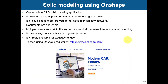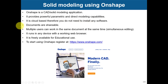So on OnShape preliminaries: OnShape is a CAD solid modeling application. It provides powerful parametric and direct modeling capabilities to the same level as other commercial tools like SolidWorks, ProE, and PTC. It is cloud-based, so there is no need to install any software. You only need a web browser and an internet connection.